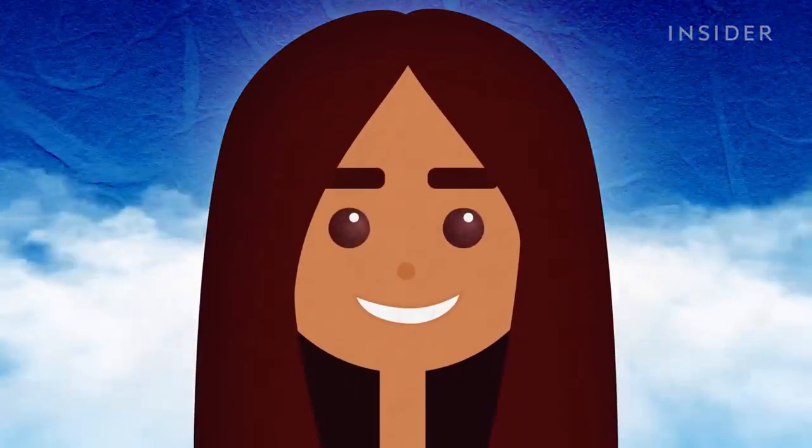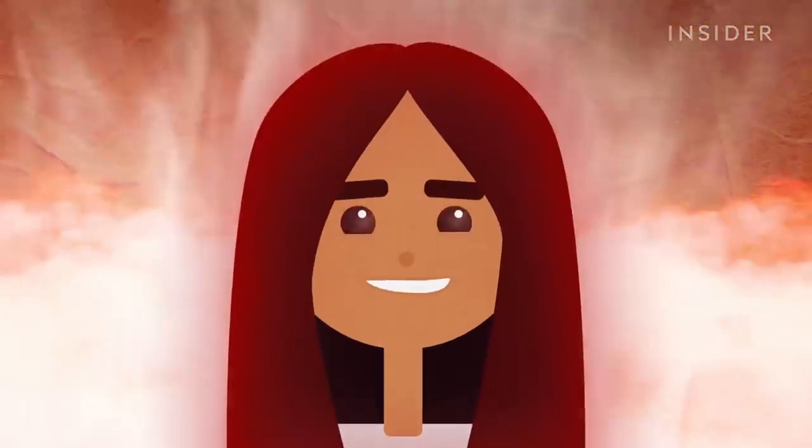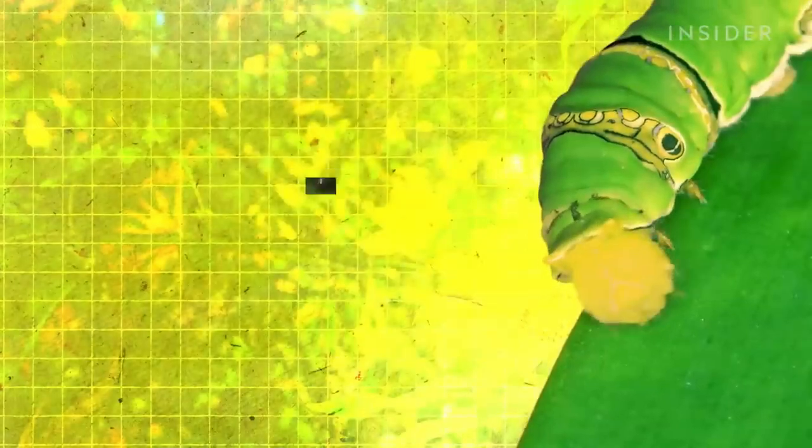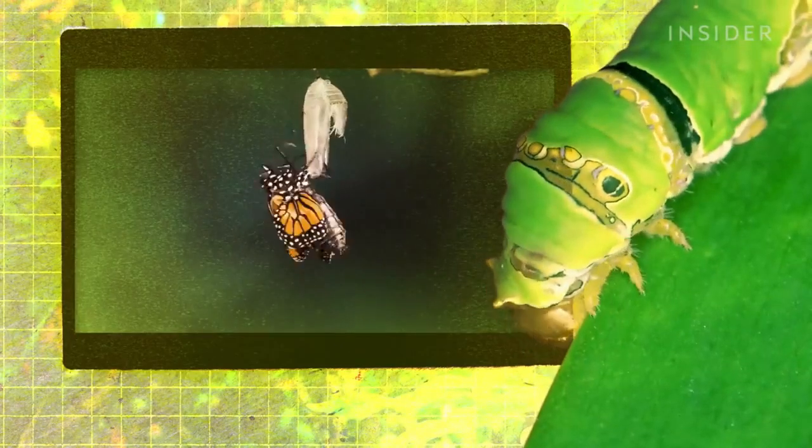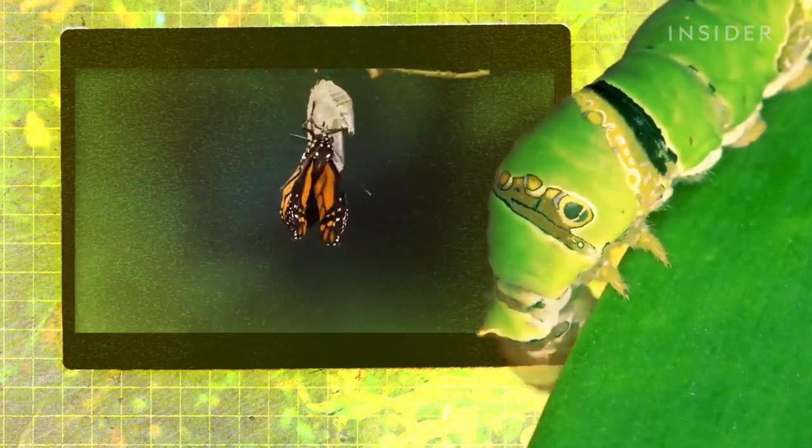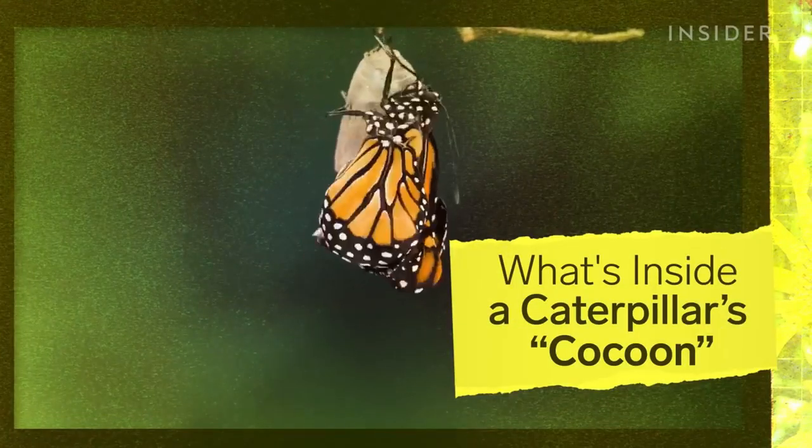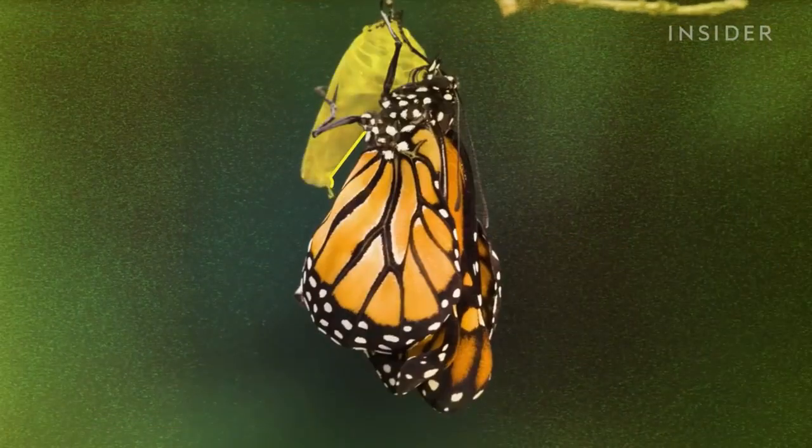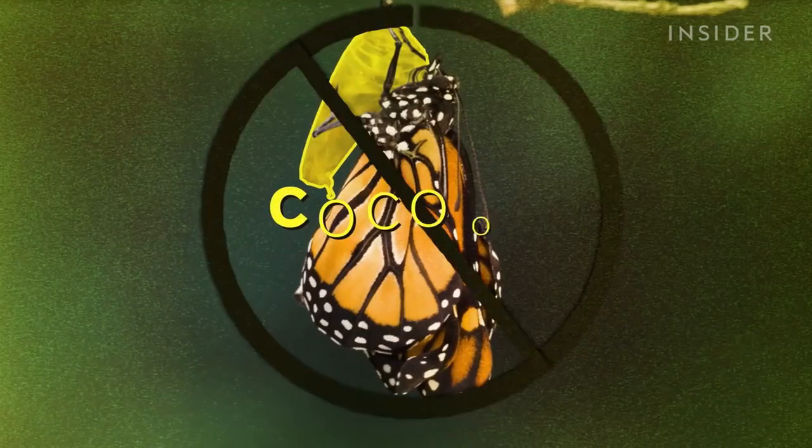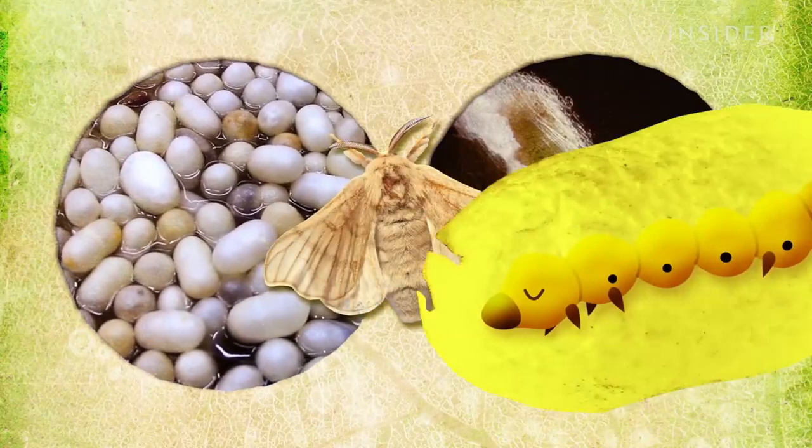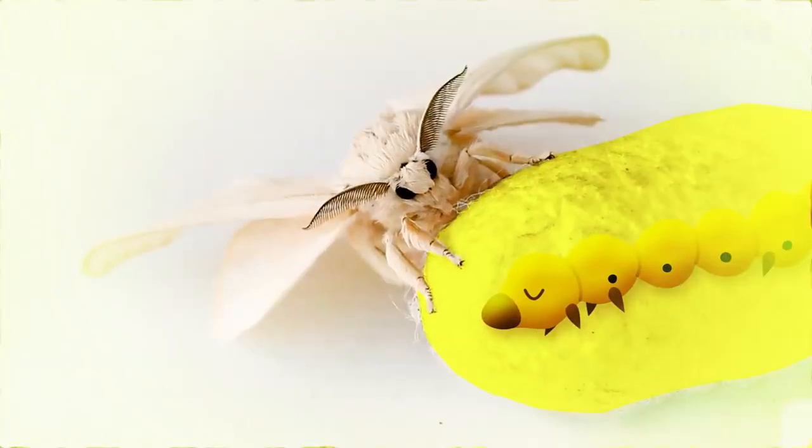What would you do for the power to fly? How about shedding your skin and dissolving your own muscles? Now, believe it or not, that gruesome process is how caterpillars earn their wings. Here's what you might not know about what's inside a caterpillar's cocoon. Contrary to popular belief, this is not a cocoon. Only certain moths build cocoons, which are like a silky sleeping bag that covers the insect.